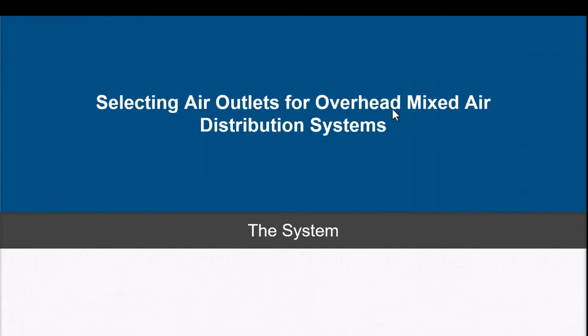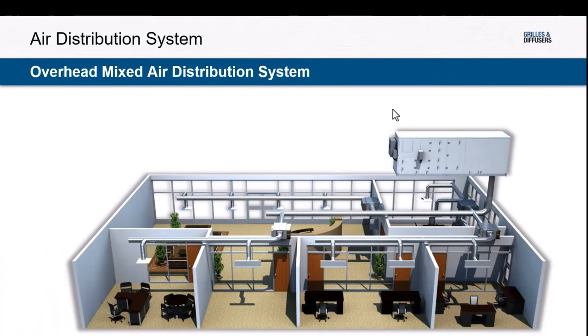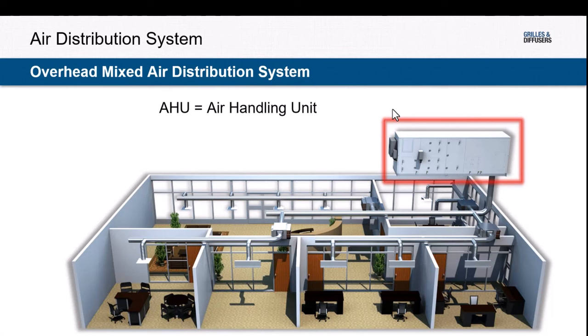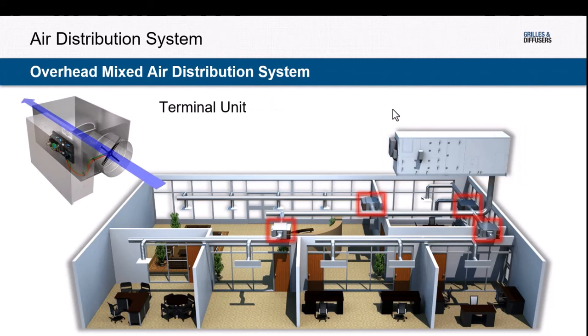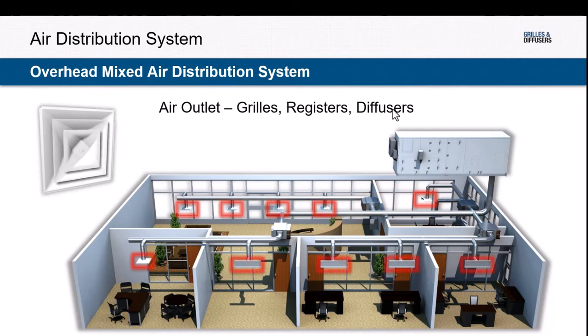Starting with the system basics: we have our air handler, which supplies air to the building and is our source of heating and cooling. Typically there's filtration, and this is where we add our fresh air requirement. The air handler provides air to the system, and the volume of that air is controlled by the thermal unit, which is connected to a thermostat to modulate air volume to the space. That brings us to our air outlets — our grills, registers, and diffusers — which are located throughout the building and used to distribute the air throughout the space.